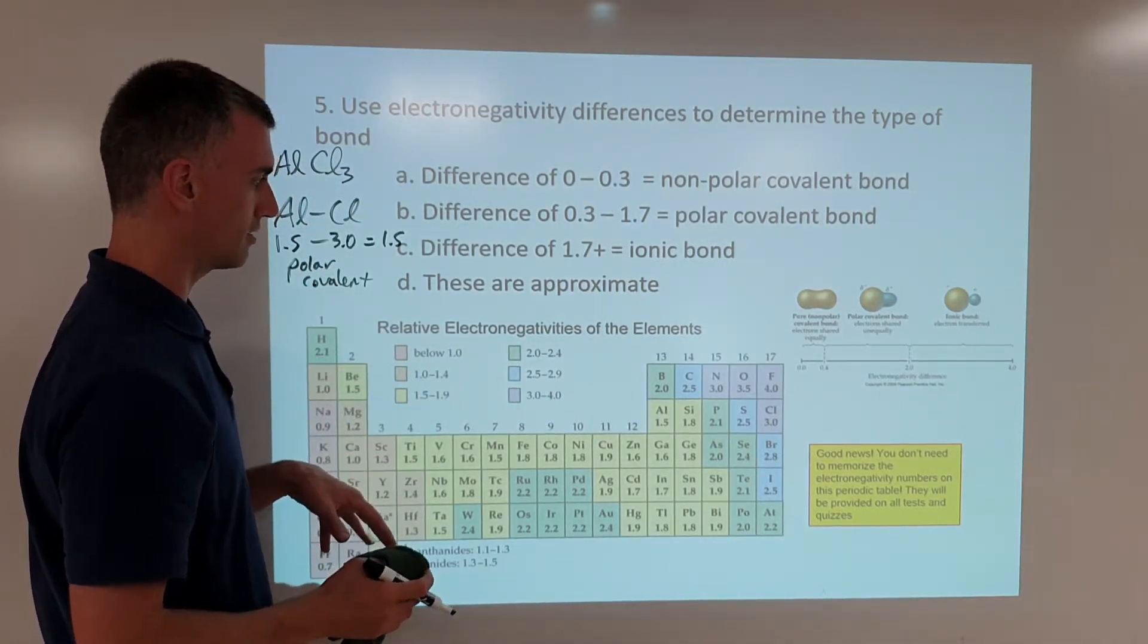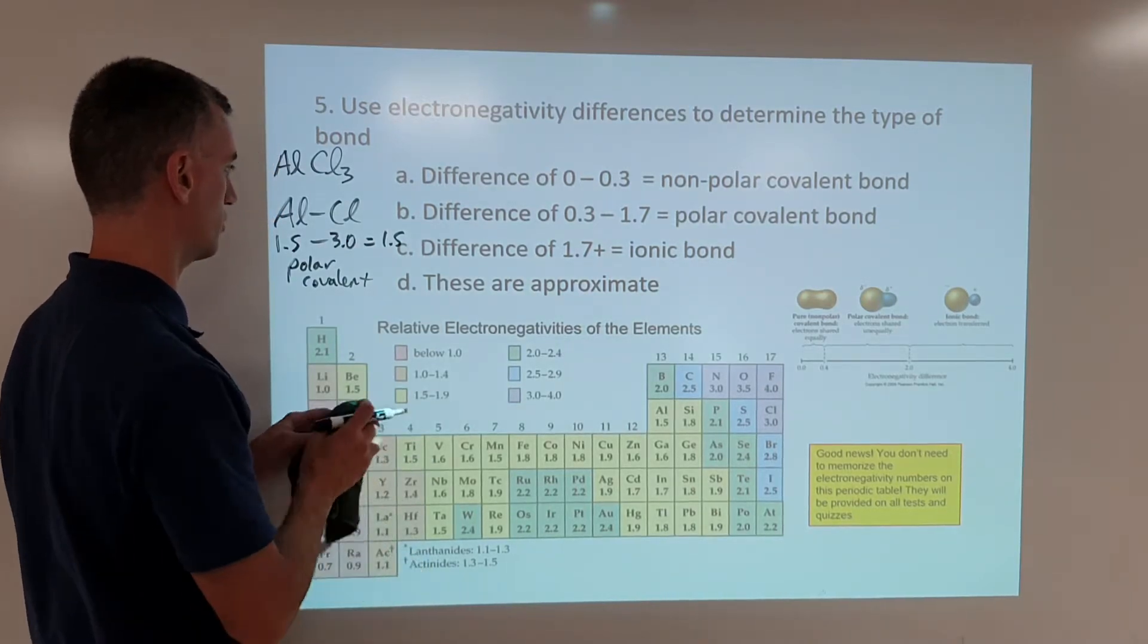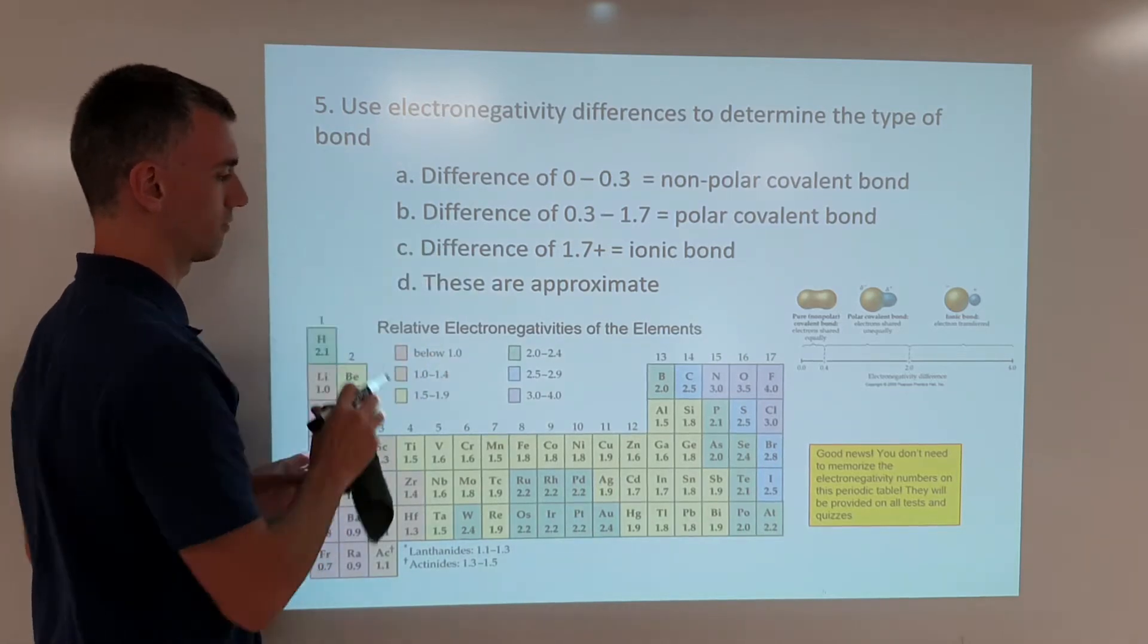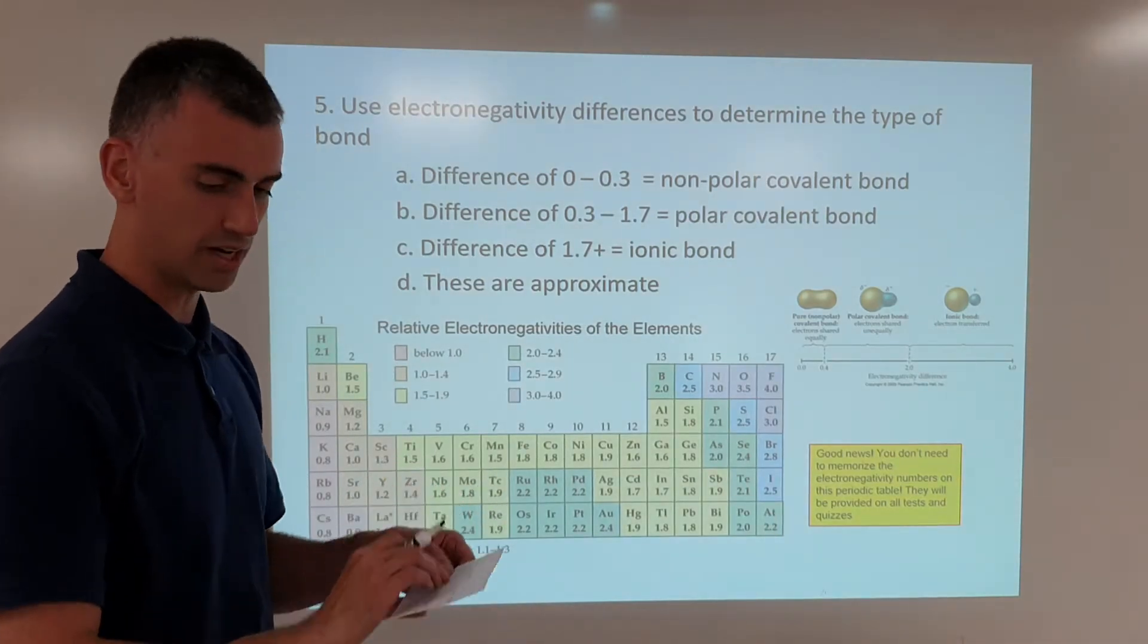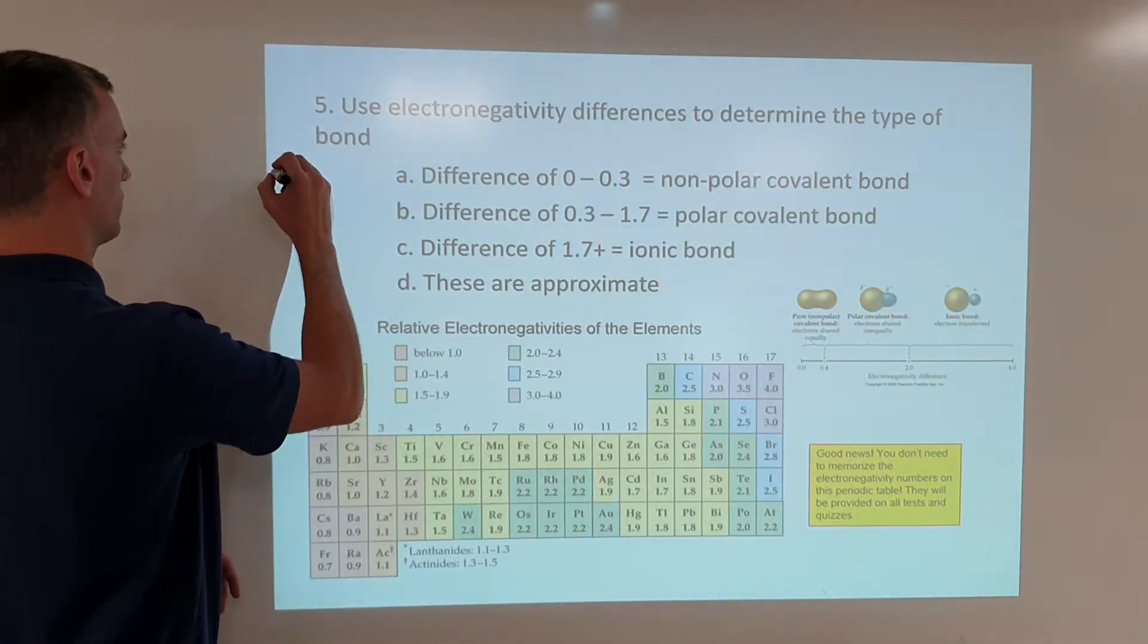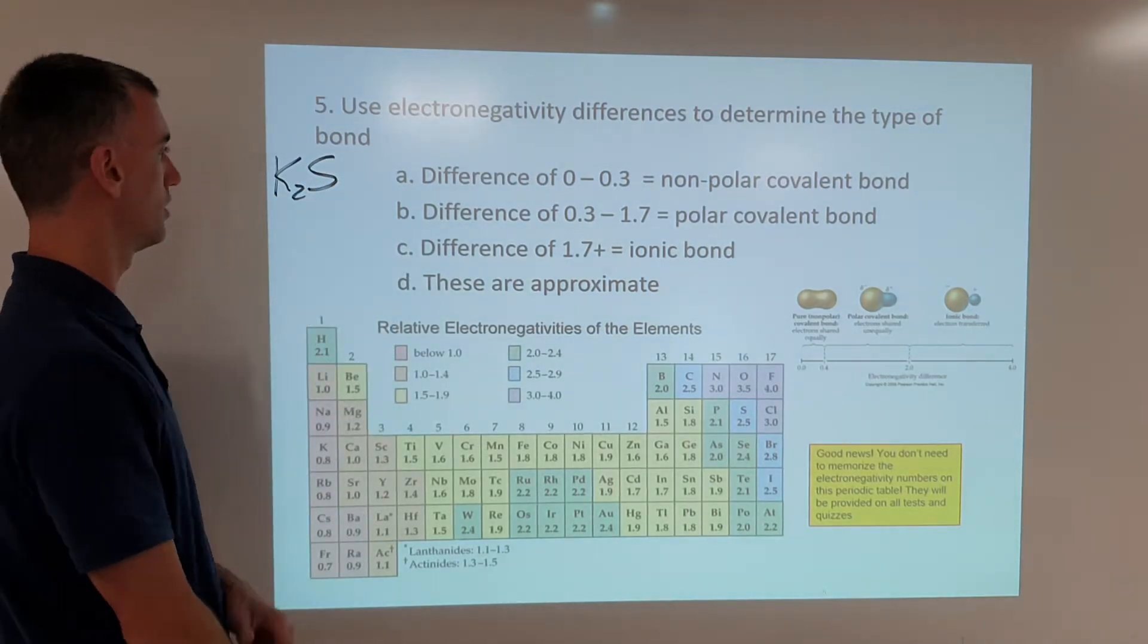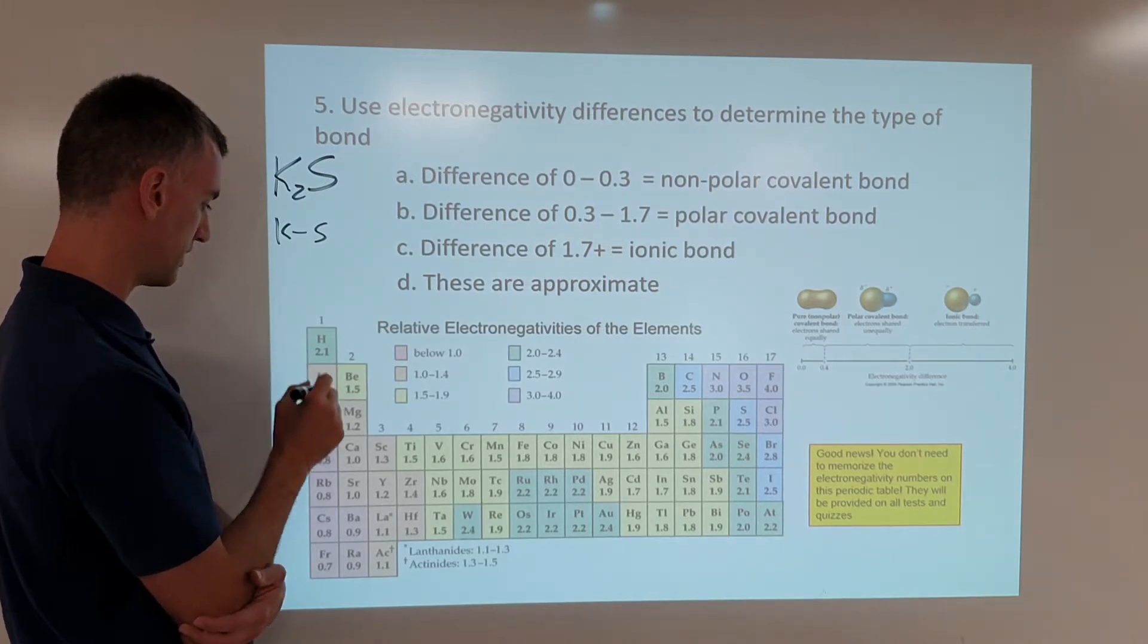Now, one thing to go back to, there's actually one more example I want to do. Potassium and sulfur. So suppose you have this formula, K2S. Well, that's a potassium-sulfur bond. So you look at potassium, 0.8, look at sulfur, 2.5.